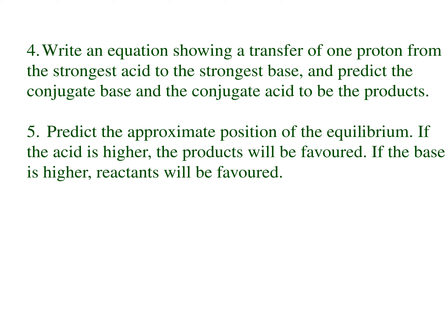Finally, we predict the approximate position of equilibrium. If the acid is higher on the table — meaning the left-hand side is higher — then products will be favored. If the base side is higher, then reactants will be favored. This is one of the biggest differences from the redox table: instead of being spontaneous or non-spontaneous, we're saying which side of the reaction is favored. In acid-base reactions, they will always be spontaneous — they will always happen — but because it's an equilibrium, we just have to predict to what extent the reaction occurs.